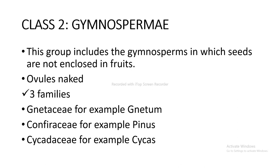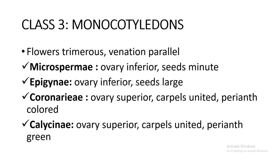Class 2 is Gymnospermae: this group includes gymnosperms in which the seeds are not enclosed in fruits; ovules are naked. It includes three families: Gnetaceae (e.g., Gnetum), Coniferaceae (e.g., Pinus), and Cycadaceae (e.g., Cycas). Class 3 is Monocotyledons: flower primaries, venation parallel.